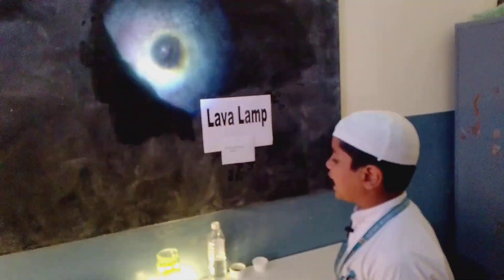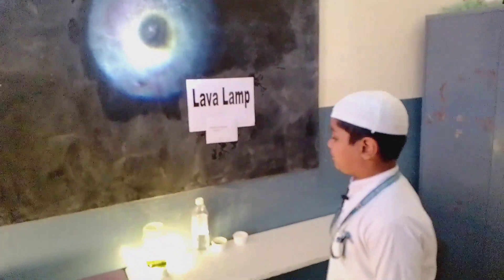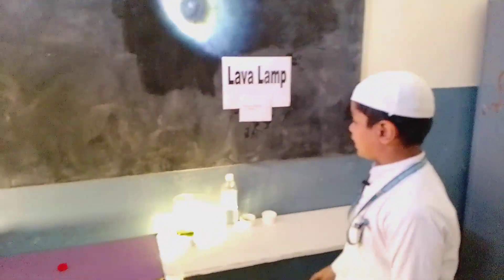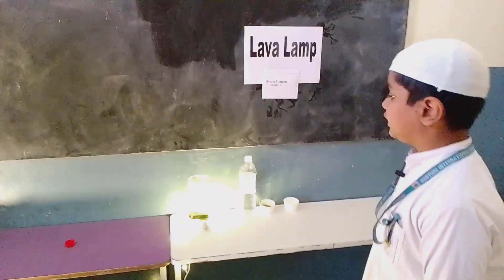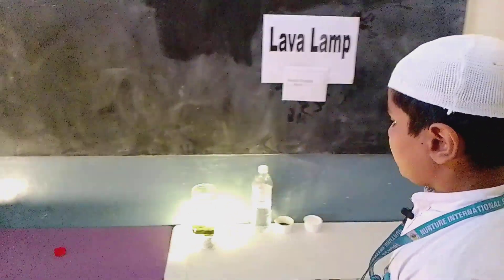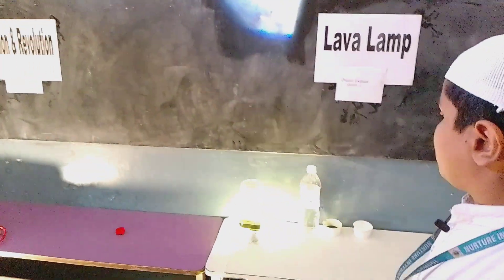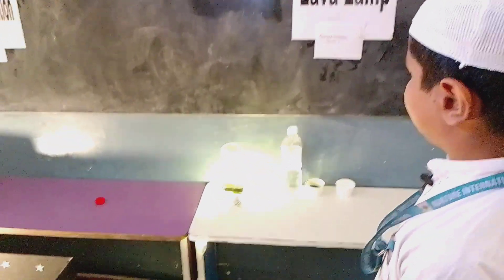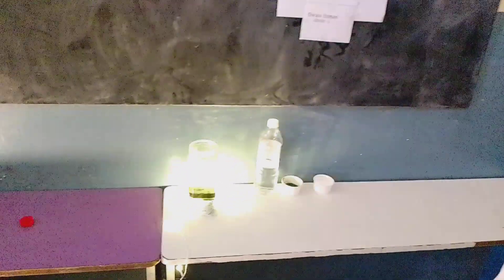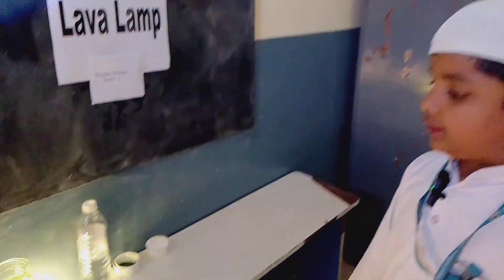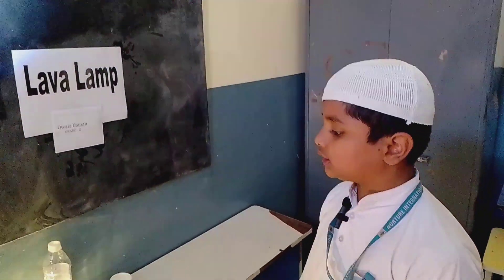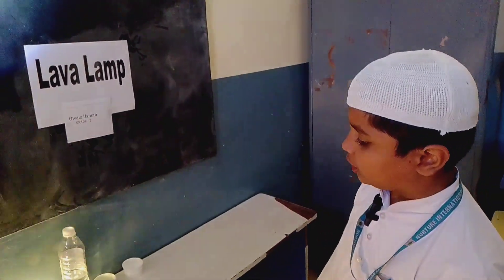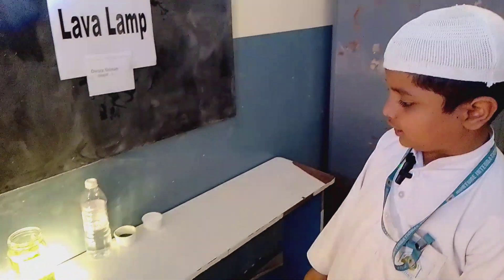When vinegar mixed with baking soda, it reacts and produces carbon dioxide. We can see bubbles popping at the surface and then settling down. This is because vinegar is more dense than oil. Thank you.